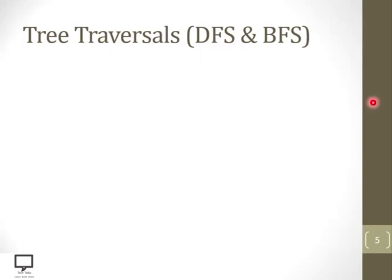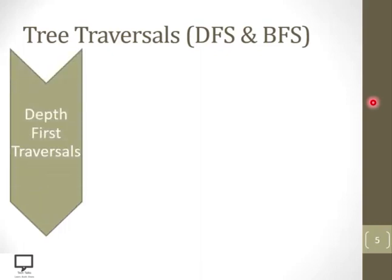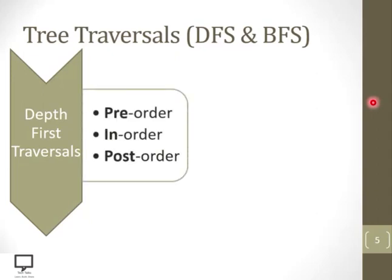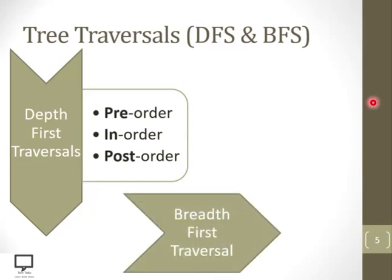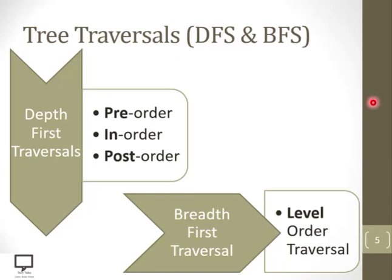Now let's start with the tree traversals. Basically, there are two ways to traverse the tree. They are depth-first traversal techniques. In depth-first traversal, we have three orders: pre-order, in-order, and post-order. Another technique is breadth-first traversal, where the tree is traversed according to the level or level-order of the tree.